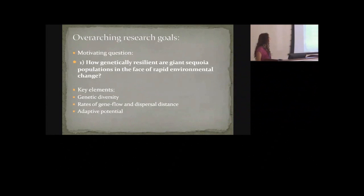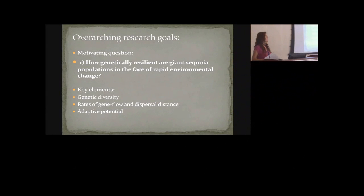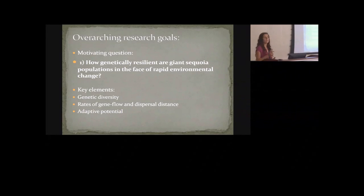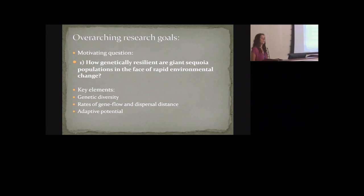Our motivating question is: how resilient are these populations to environmental change? For us, it really centers on genetic diversity, adaptive potential, and gene flow — how diverse are these populations, is some of this diversity functional, and how does it move across the landscape? That's really important when conditions change, because a larger pool of diversity means more potential for some of it to be suitable to future conditions.